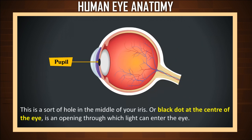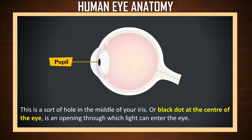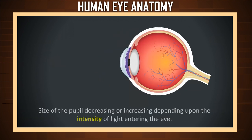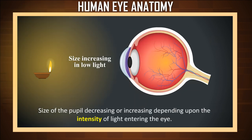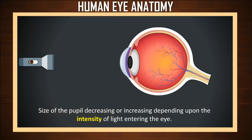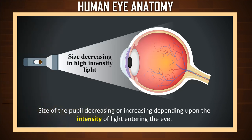Pupil. The pupil is a sort of hole in the middle of your iris, or the black dot at the center of the eye. It is an opening through which light can enter the eye. The size of the pupil decreases or increases depending upon the intensity of light entering the eye.